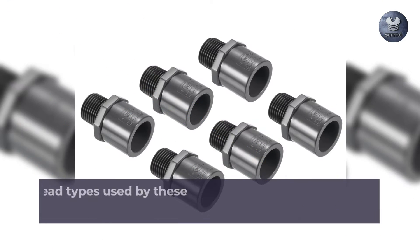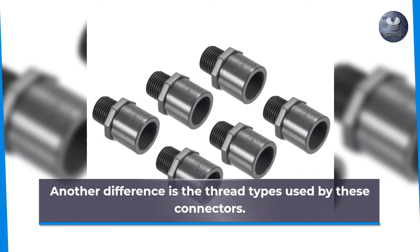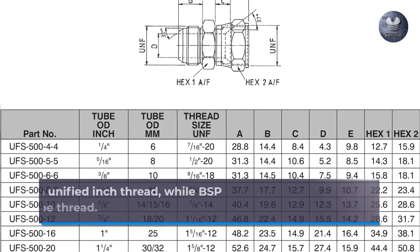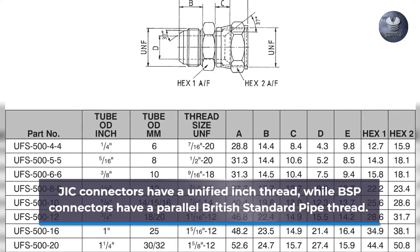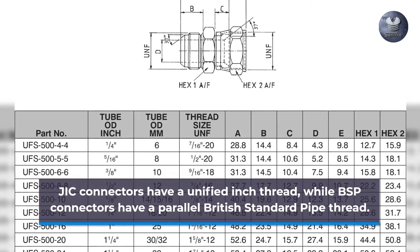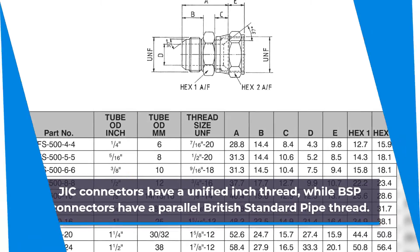Another difference is the thread types used by these connectors. JIC connectors have a Unified Inch Thread, while BSP connectors have a Parallel British Standard Pipe Thread.